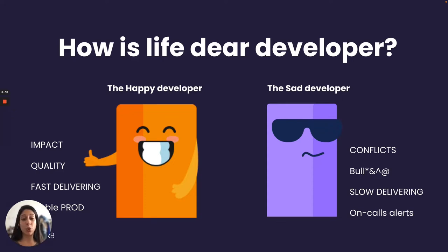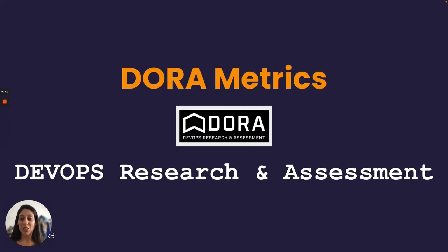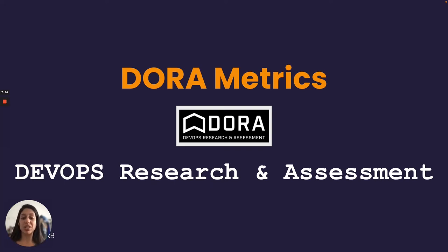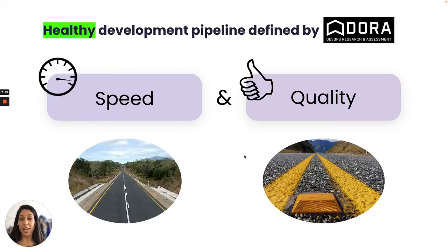I want to talk about DORA metrics and how they relate to this situation. DORA — DevOps Research and Assessment — is a group of four metrics defined by Google after years of research. This group of metrics measures your team's performance and helps you understand whether you are performing well and how healthy your development pipeline is. The other category is quality.